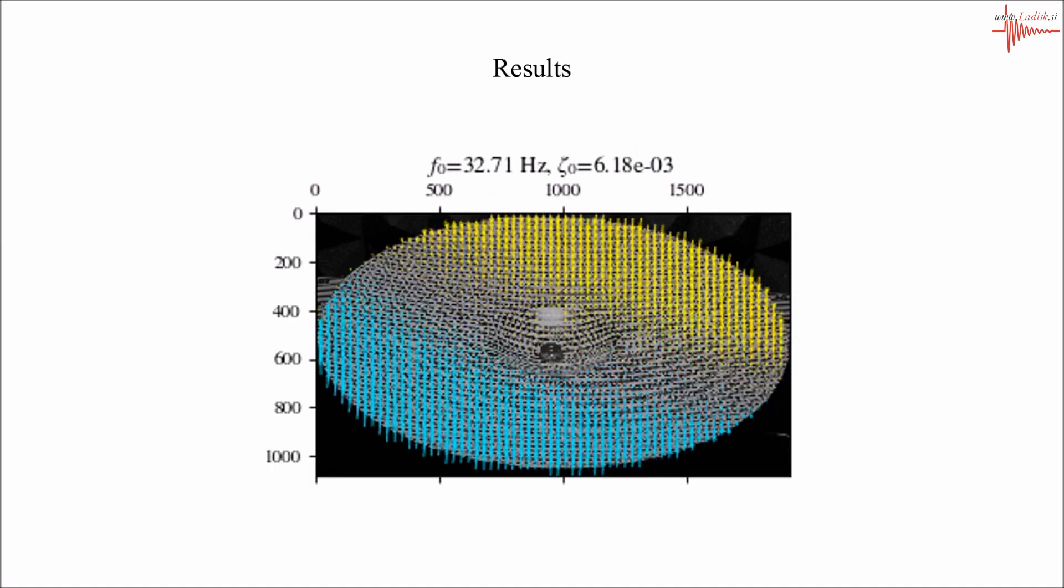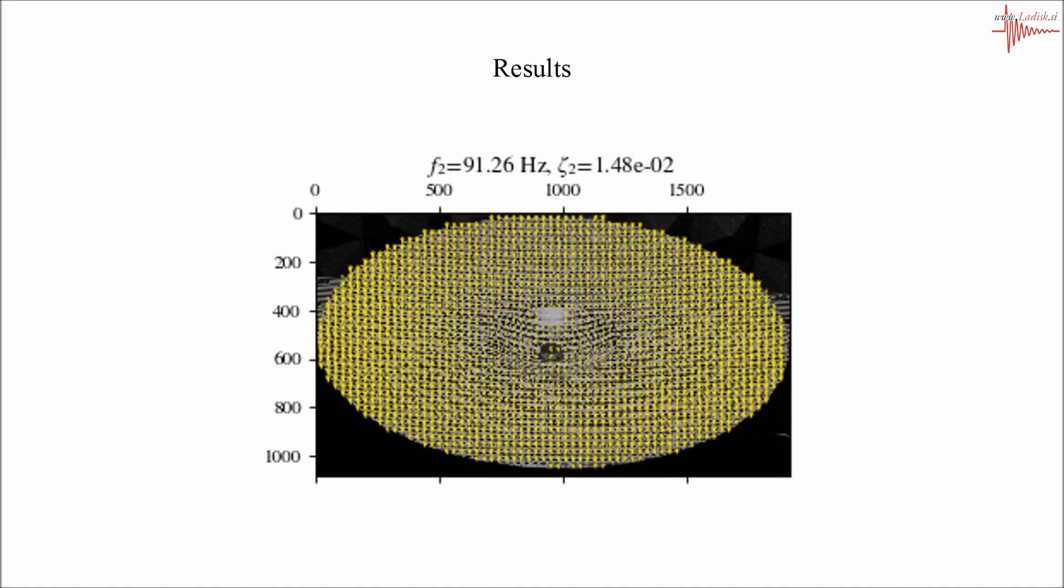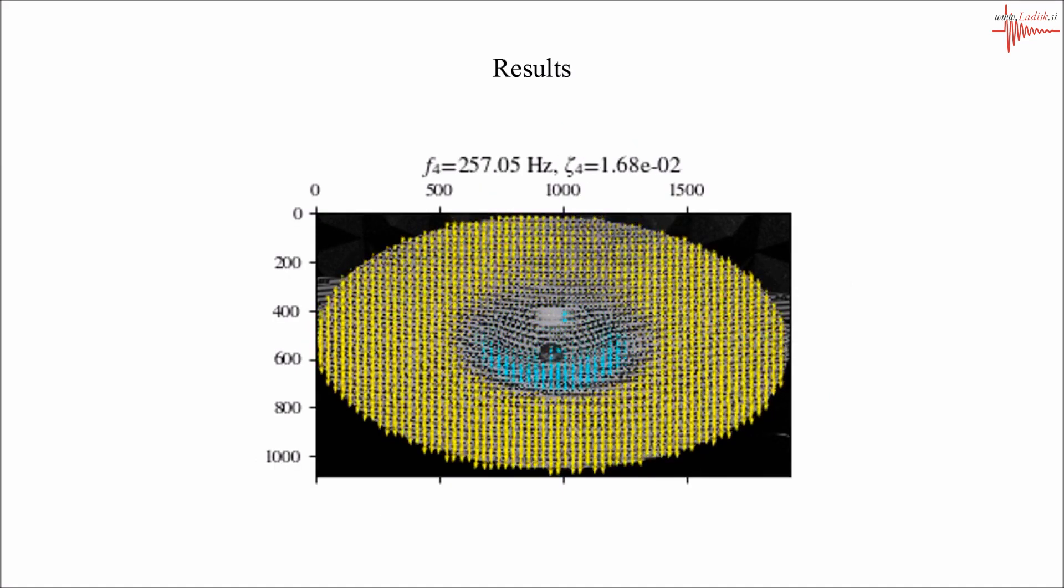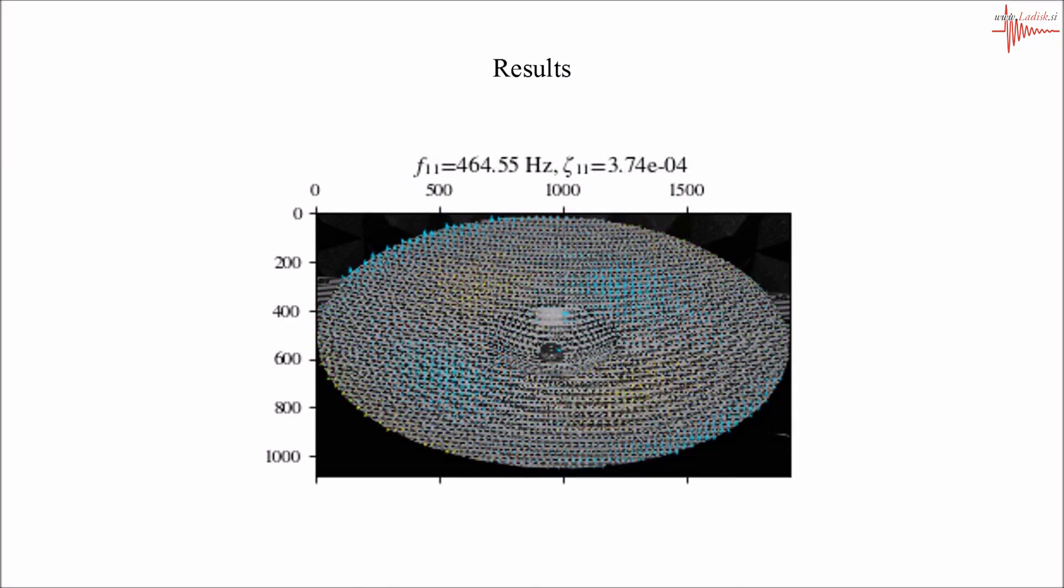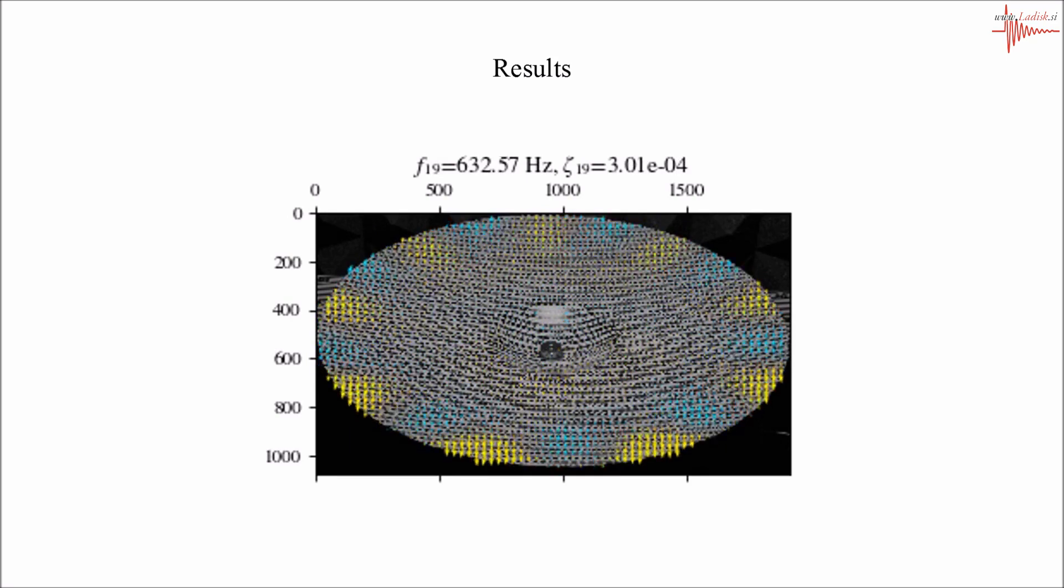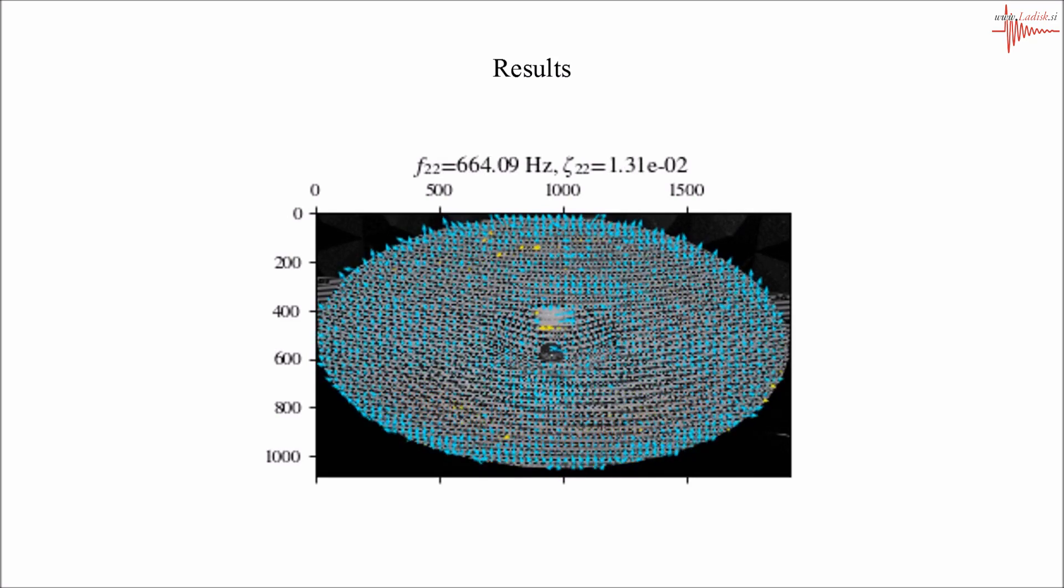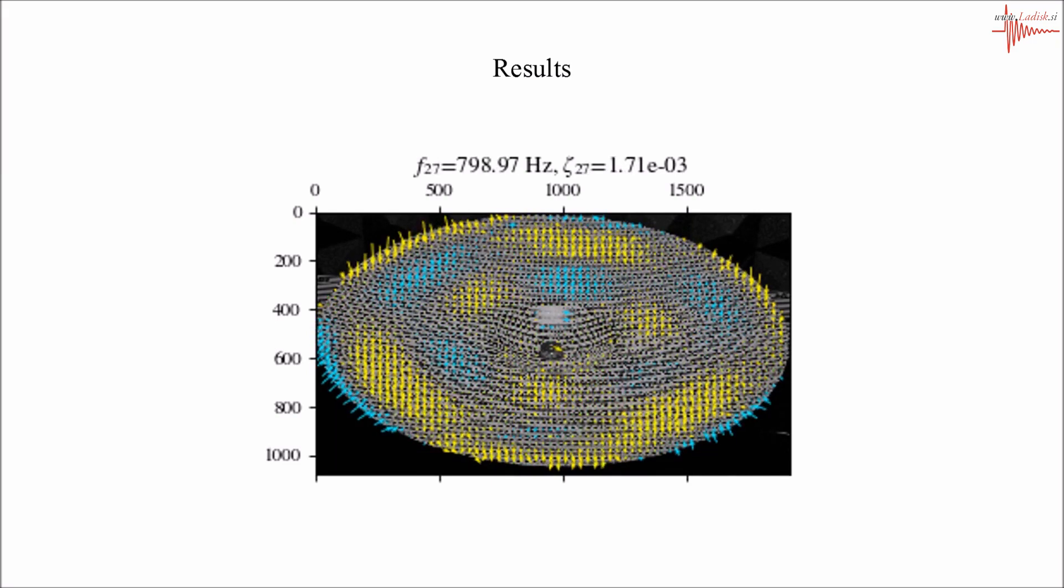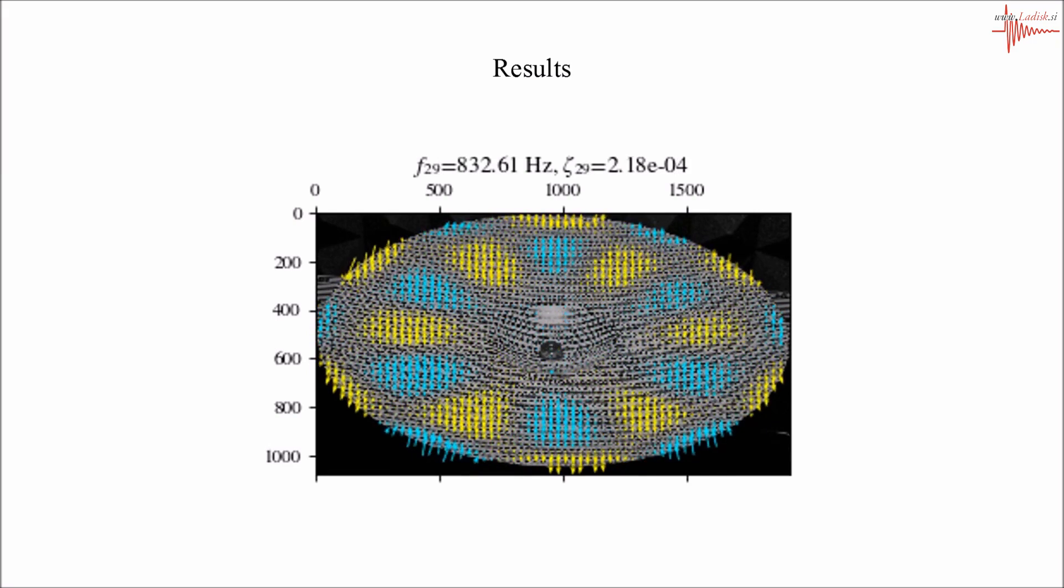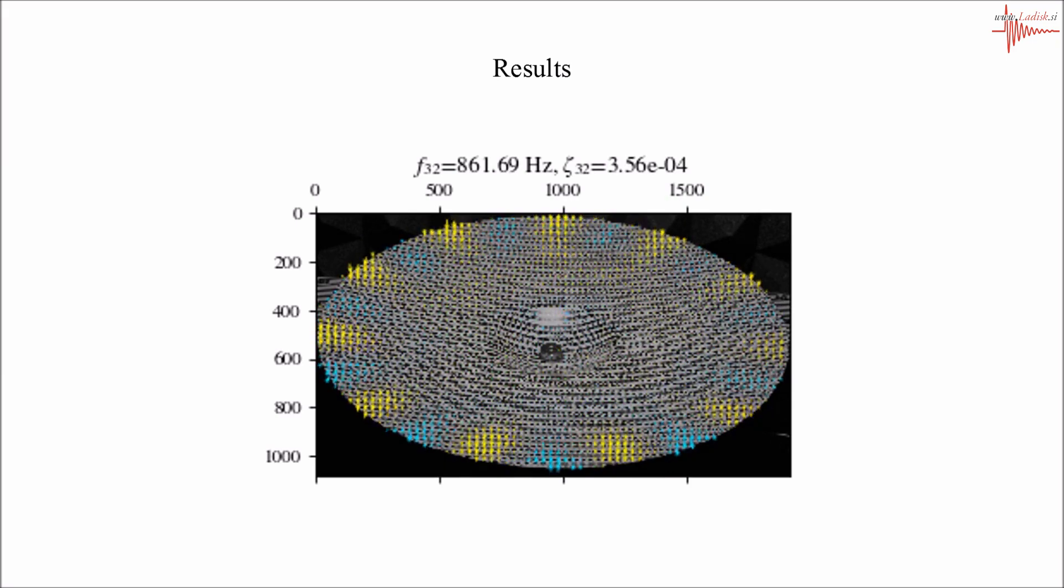And these are the identified mode shapes. 39 mode shapes were measured, all above the Nyquist frequency of the 50 frames per second video that was shot on a 600 euro consumer DSLR camera. The spectrum up to 1 kHz was measured. This, for instance, is a mode shape at 700 Hz, 800 Hz, 815 Hz, 860 Hz, and we went all the way up to a mode shape at 991 Hz.